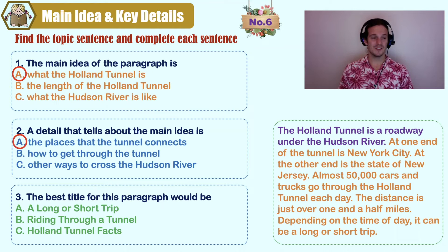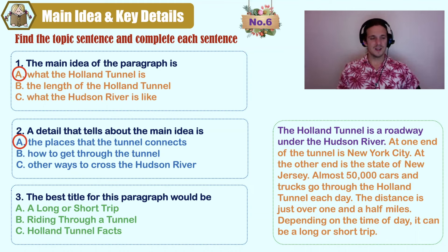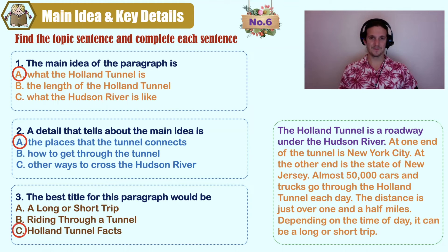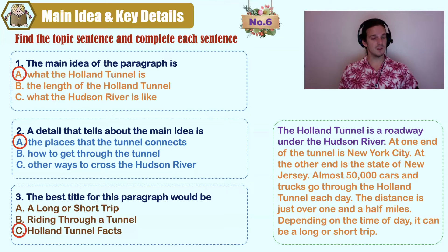This paragraph talks about the places that the tunnel connects. And for the best title: A) a long or short trip, B) riding through a tunnel, C) Holland Tunnel facts. It has to be C. If you chose A or B, you wouldn't know what this paragraph is about. A is vague and nonspecific. B is more specific but doesn't say which tunnel. Only C is the best answer for the title.